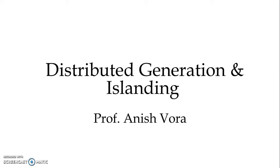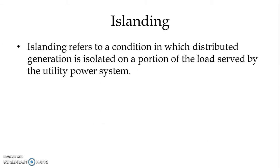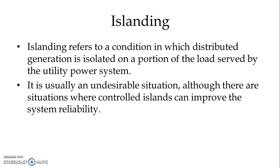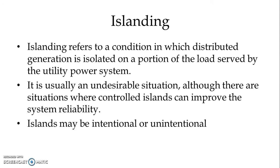In islanding condition, islanding refers to a condition in which distributed generation is isolated on a portion of the load served by the utility power system. It is usually an undesirable situation, although there are situations where controlled islands can improve the system reliability. Islands may be intentional or unintentional.